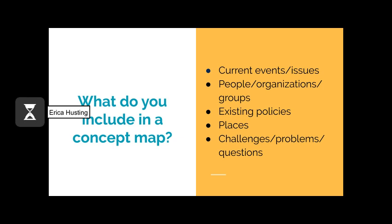As you begin to think about starting your concept map, there are several topics, subjects, and ideas that you can include in this brainstorm as a good jumping-off point. For example, are there any current events or issues regarding this area of research? Who are the people, organizations, and groups who might be involved, have an opinion, or are an expert in this area? Are there any existing policies that have influence in this topic? Is there a physical place, city, or area that is specific to this research? And finally, are there any challenges, problems, and questions involving this area of research?